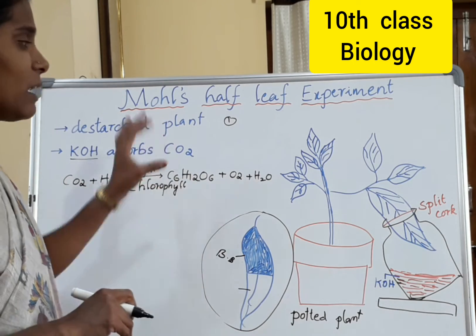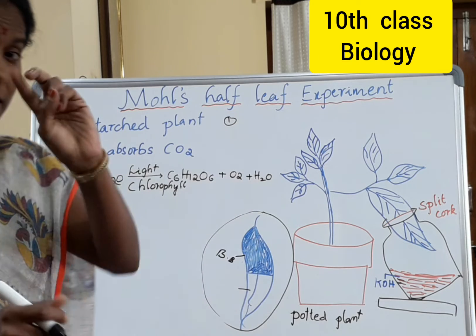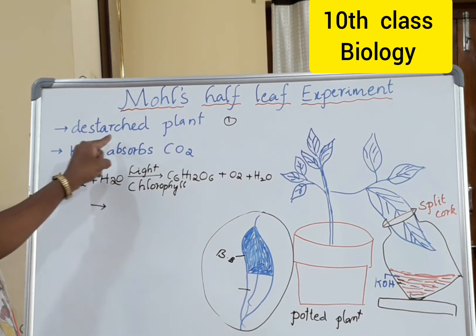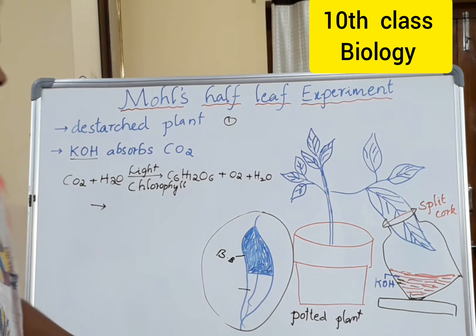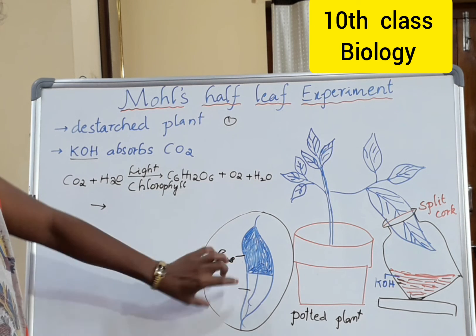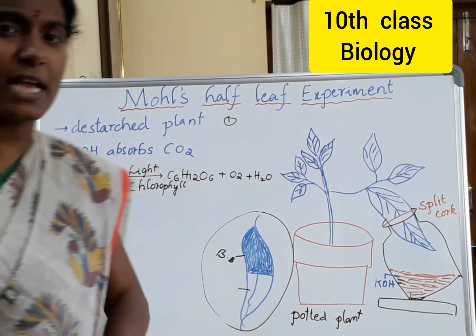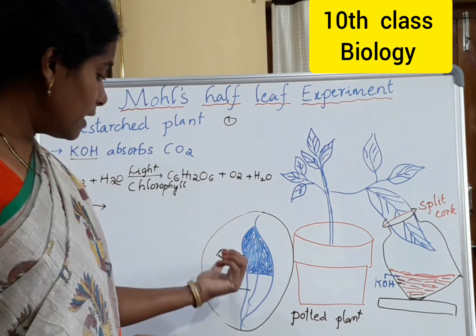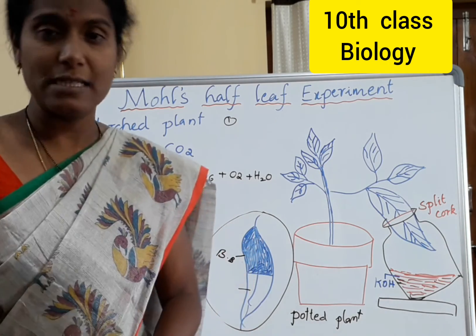Students, this is a very very important experiment. We can learn it easily. The reasoning questions are 2 to 3: why should we de-starch the plant? What is the role of KOH in this experiment? And which reagent are we using to identify the starch? That is iodine or betadine solution.